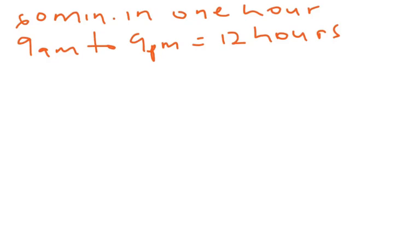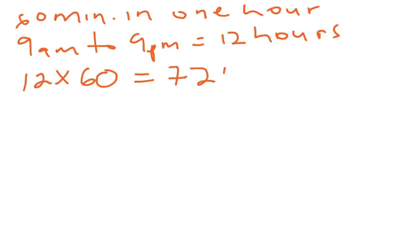If 60 minutes gives us one hour and the shop is open for 12 hours, we multiply 12 times 60, and that will give us 720 minutes per day.